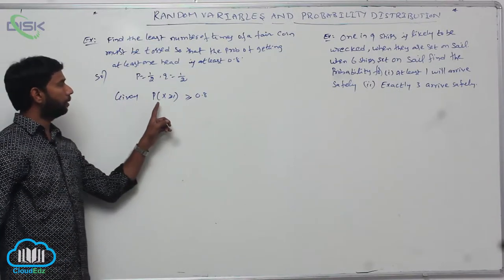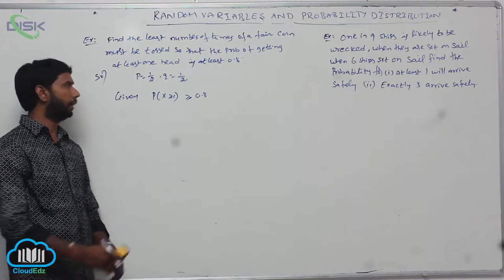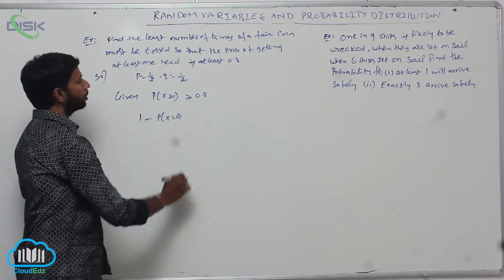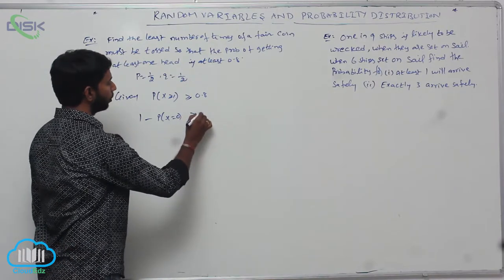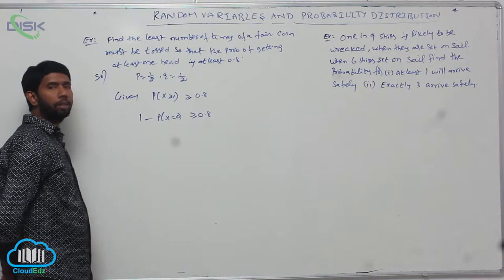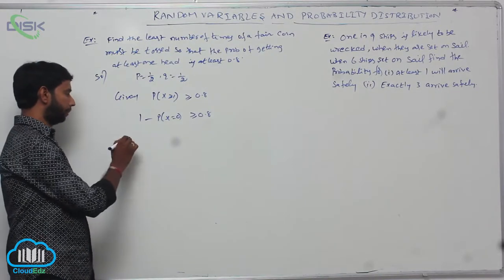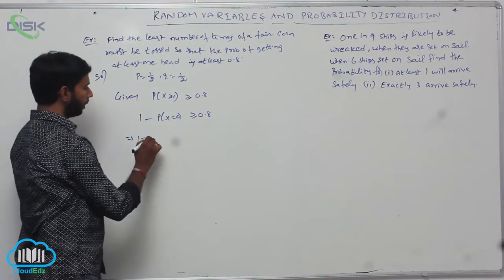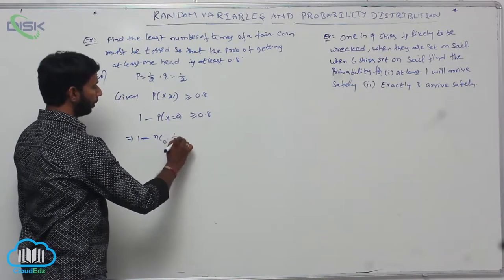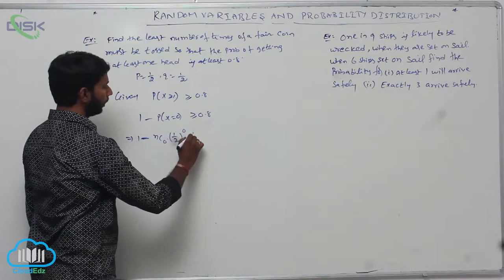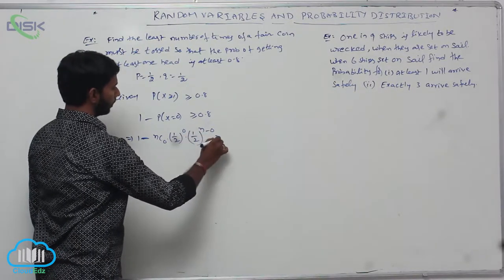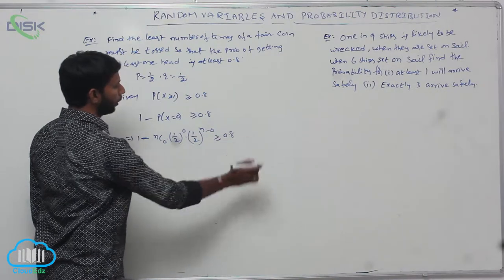P of X greater than or equal to 1 is greater than or equal to 0.8. It can be written as 1 minus P of X equal to 0 is greater than or equal to 0.8. That implies 1 minus P(X=0), which equals NC0 into (1/2)^0 into (1/2)^(N-0), is greater than or equal to 0.8.